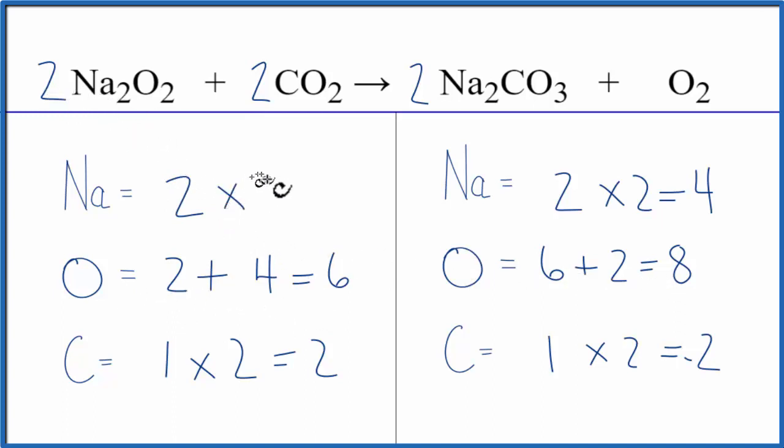Two times two. Sodium atoms are balanced. And let's update the oxygens. Two times two, four oxygens, plus two times two, four oxygens. That gives us eight. So we've balanced this equation.